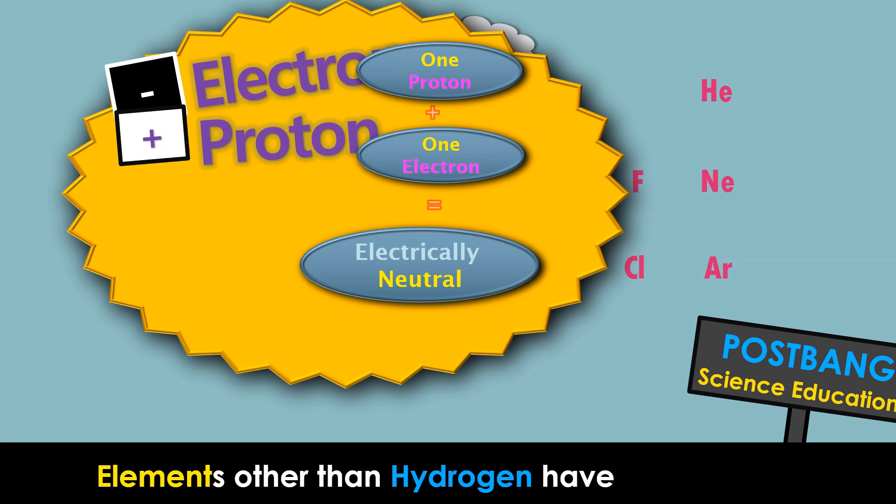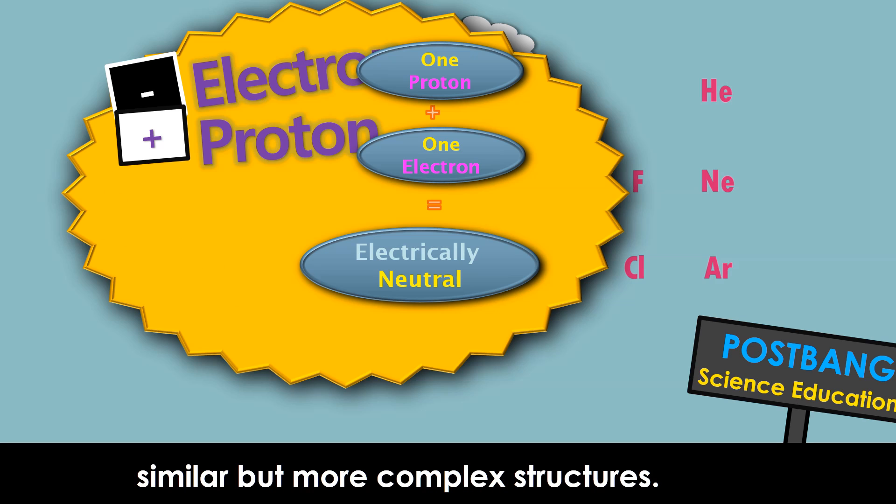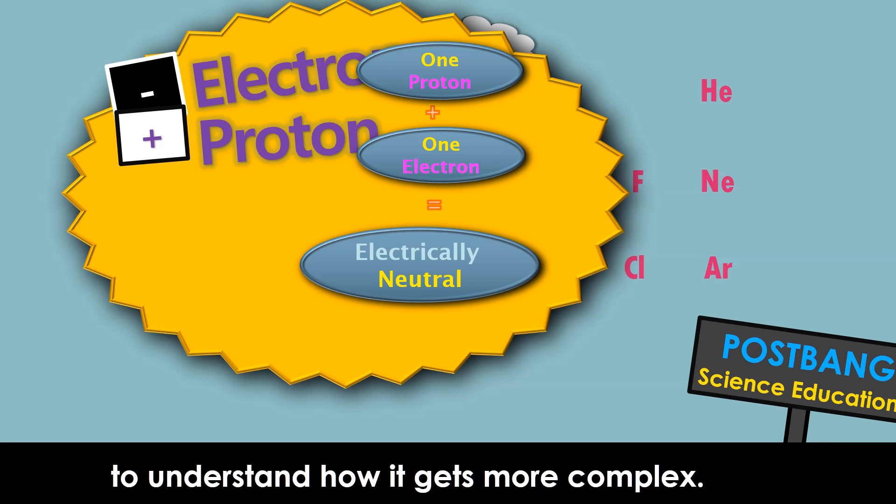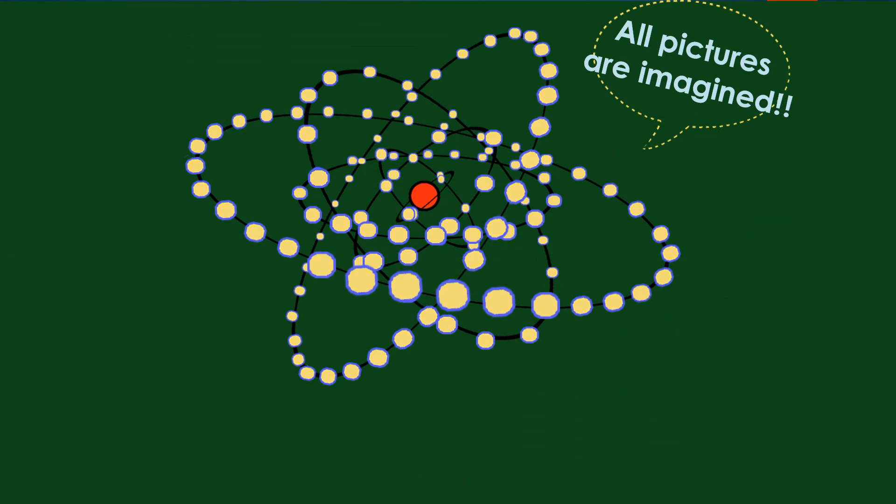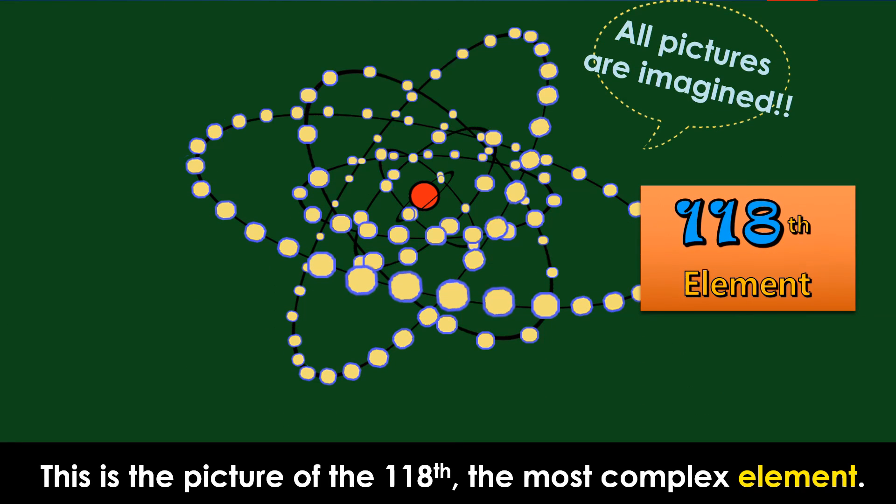Elements other than hydrogen have similar but more complex structures. Let's first take a look at this picture to understand how it gets more complex. This is the picture of the 118th, the most complex element.